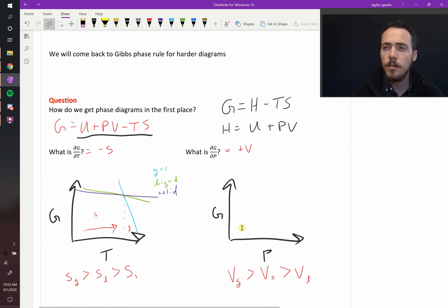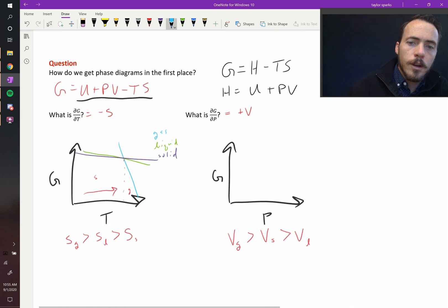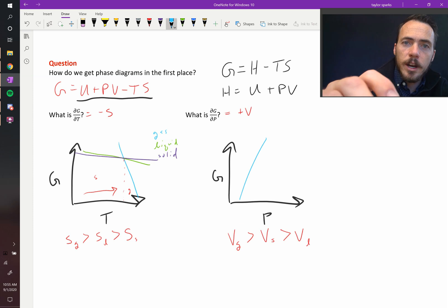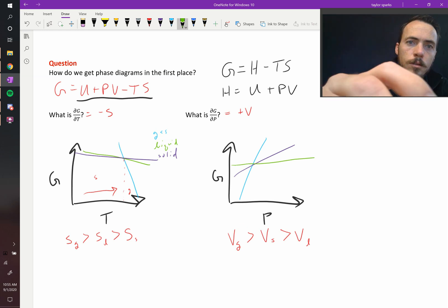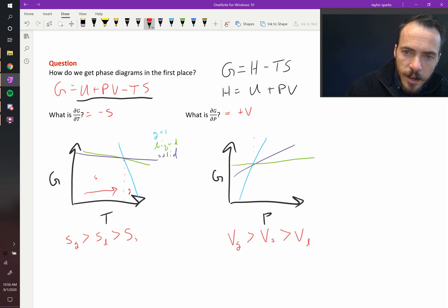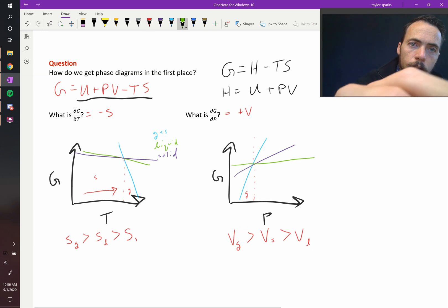So I've just sketched the G versus T diagram for the triple point. Let's do it for the G versus P now. We're going to use the same colors as before. The largest volume will be the gas, followed by that of a solid. So let's do purple for solid, and then we'll do it for our liquid. So, same as before, there exists a single temperature where all three of those are in equilibrium. At lower pressures, we're going to have gas, and to the right of it, we're going to have liquid.